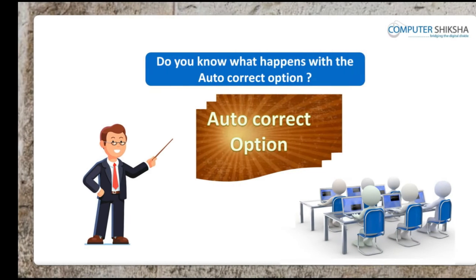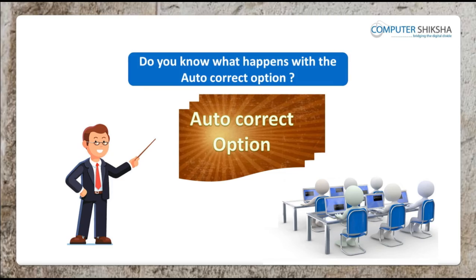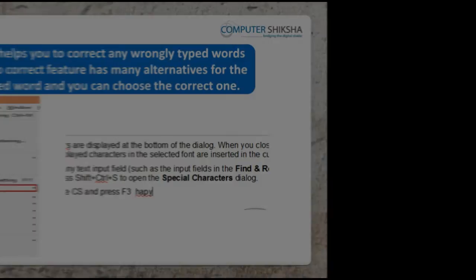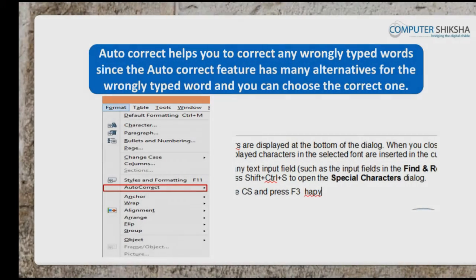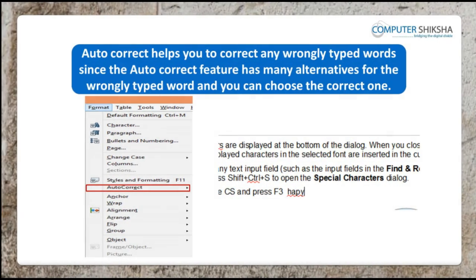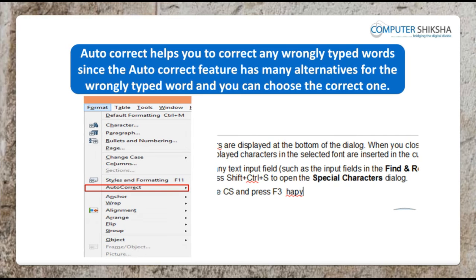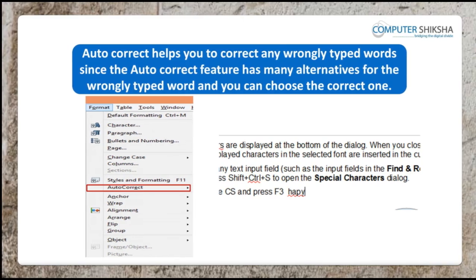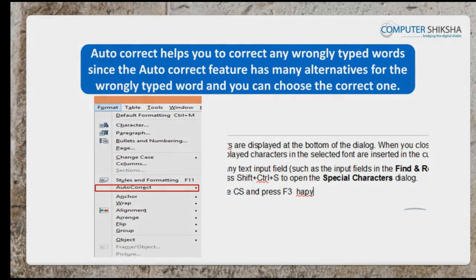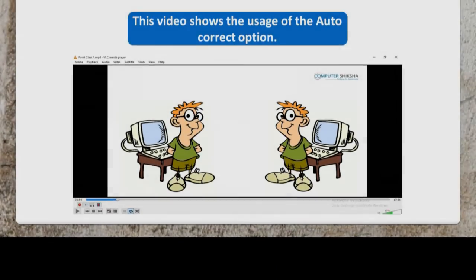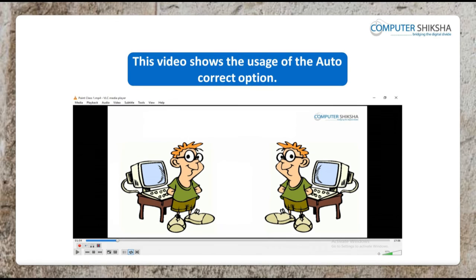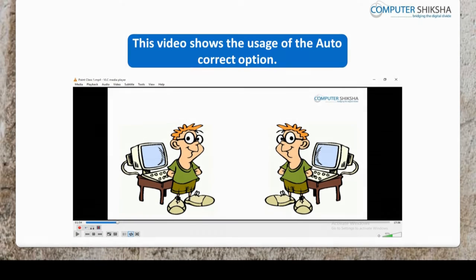Let us now begin the Autocorrect section. Autocorrect helps to correct any wrongly typed words. Since the Autocorrect feature has alternatives for the wrongly typed word, you can choose the correct one. This video shows the usage of the Autocorrect option.